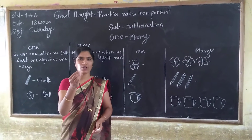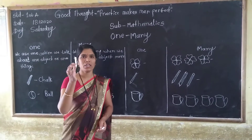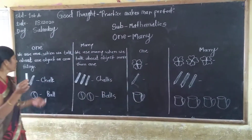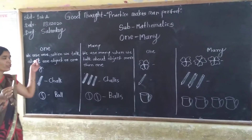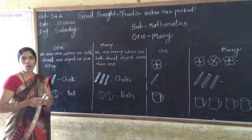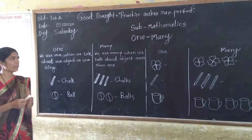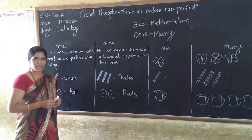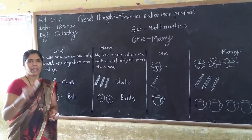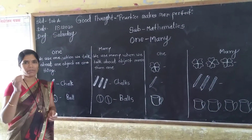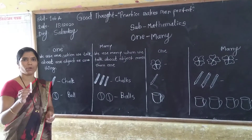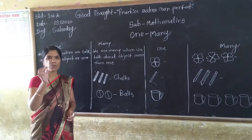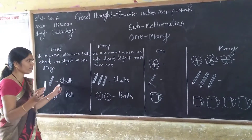How do we say chop? This is only one chop. We use 'one' when we talk about one object or one thing. This is only one chop.